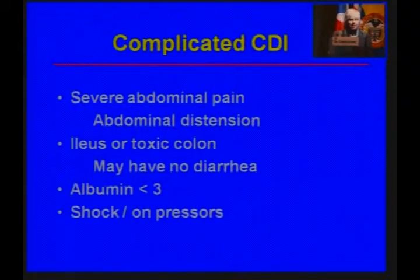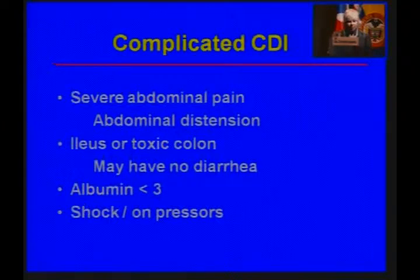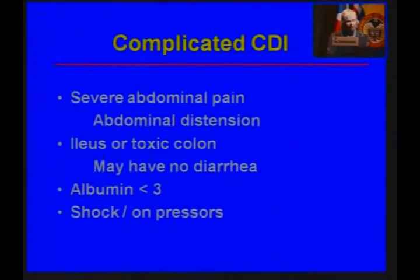Sometimes people have disease that's even beyond severe — the Infectious Disease Society has called this complicated Clostridium difficile infection. It's what you and I might casually call toxic colon or fulminant colitis. That's severe C. difficile plus distension or ileus with a toxic colon, low albumin, or shock requiring pressor therapy. These are the sickest of the sick of your C. difficile patients.